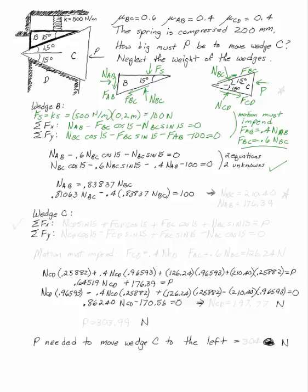That I can solve. That gives me NBC is 210.40 and, if you want to, you can go back and say NAB is 176.39, but we're not actually going to need that number.